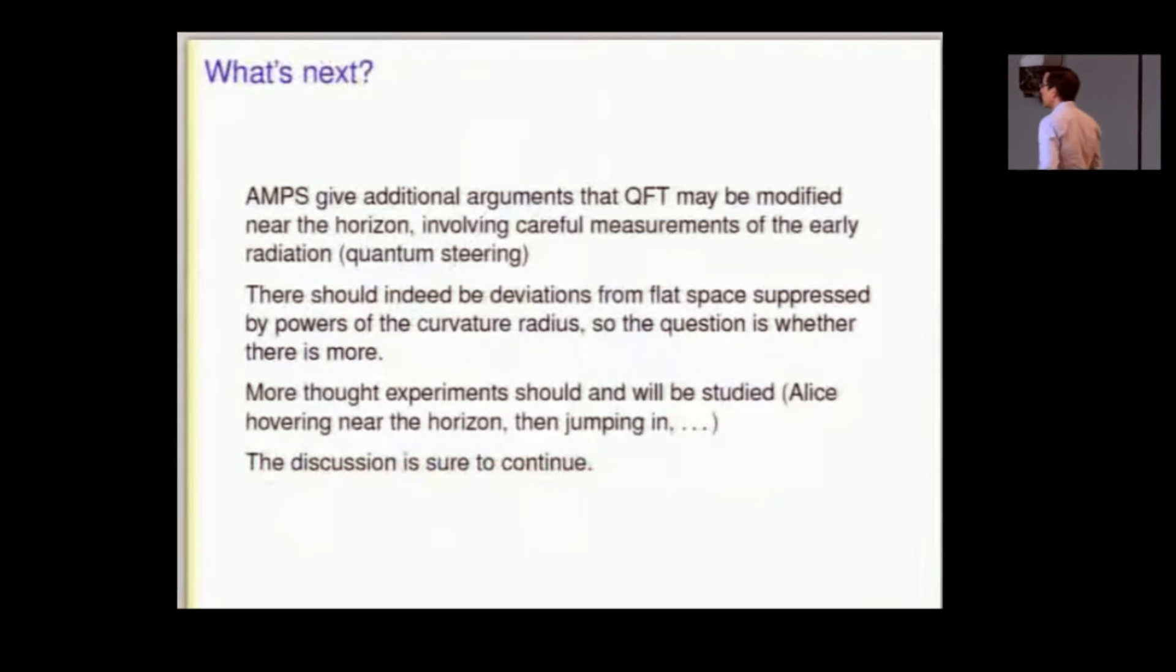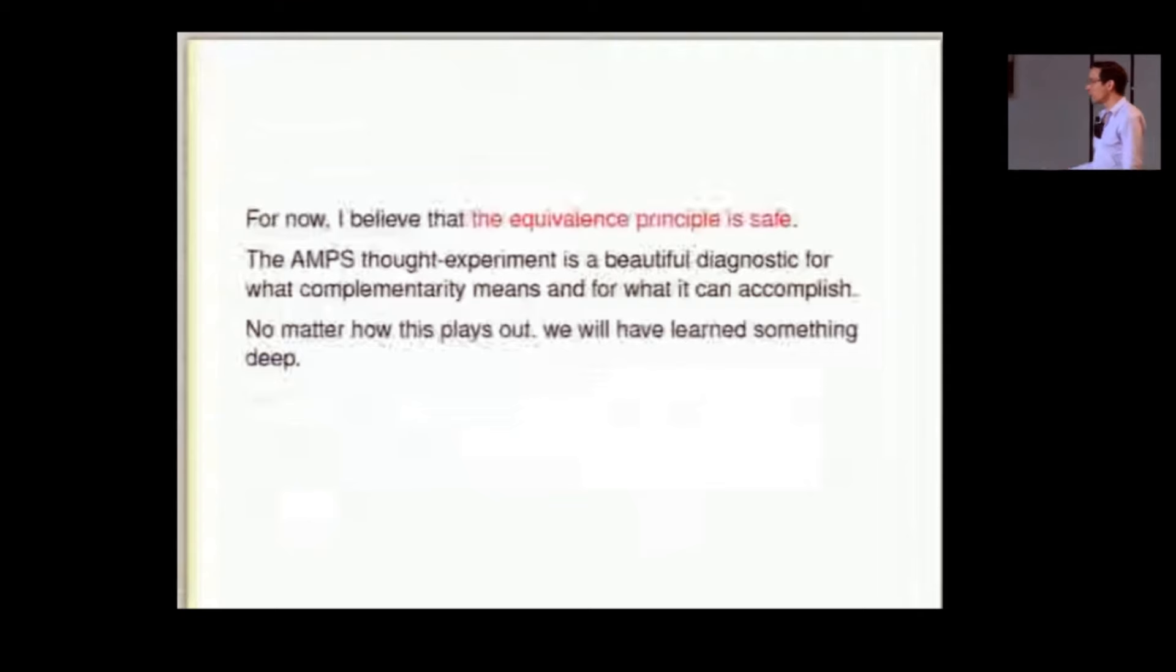Okay, so I want to close by just saying that AMPS have more arguments. I gave the one that's the cleanest. It doesn't require any particular measurements on the Hawking radiation. It seems incredibly simple, and so at first there seem to be very few loopholes. There are more complicated things you could try to do, but they also have more loopholes, and I'm sure that we'll be working on more thought experiments in the near future, and the discussion is far from over.